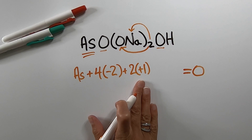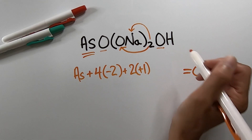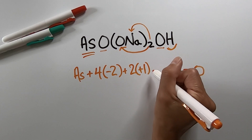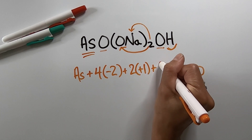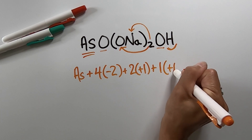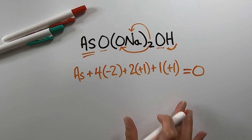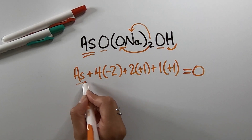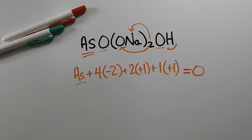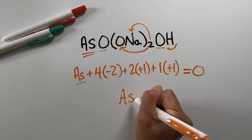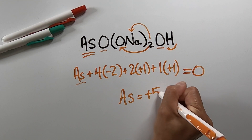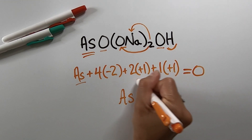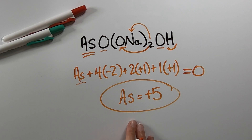And then we have one hydrogen, so plus 1 times positive 1. And that's it — all you have to do now is solve for arsenic, or As, and you should get As equals positive 5, which means the oxidation number of the arsenic atom in sodium arsenate is positive 5.